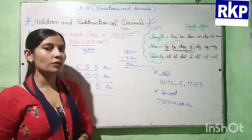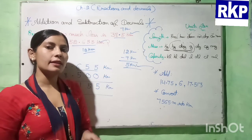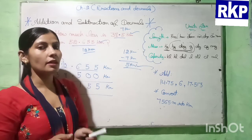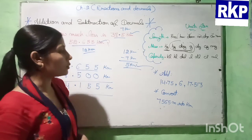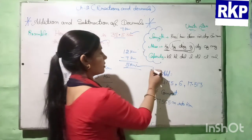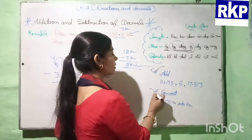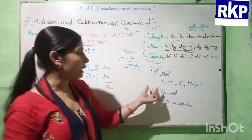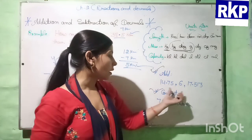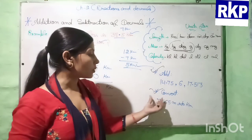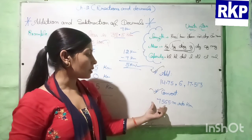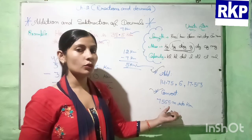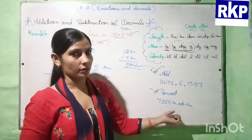So students, like this we have to add and subtract decimals. Now you have to solve these two questions by yourself: add the given numbers, and also convert 7,565 meters into kilometers.